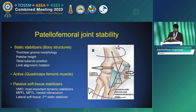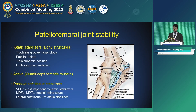The stability of the patellofemoral joint is maintained by the complex interaction of three stabilizing groups. First, static stabilizers include bony structures: trochlear morphology, patella height, tibial tubercle position, and limb alignment and rotation. Second, active stabilizers — the vastus medialis oblique (VMO) is the most important dynamic stabilizer.